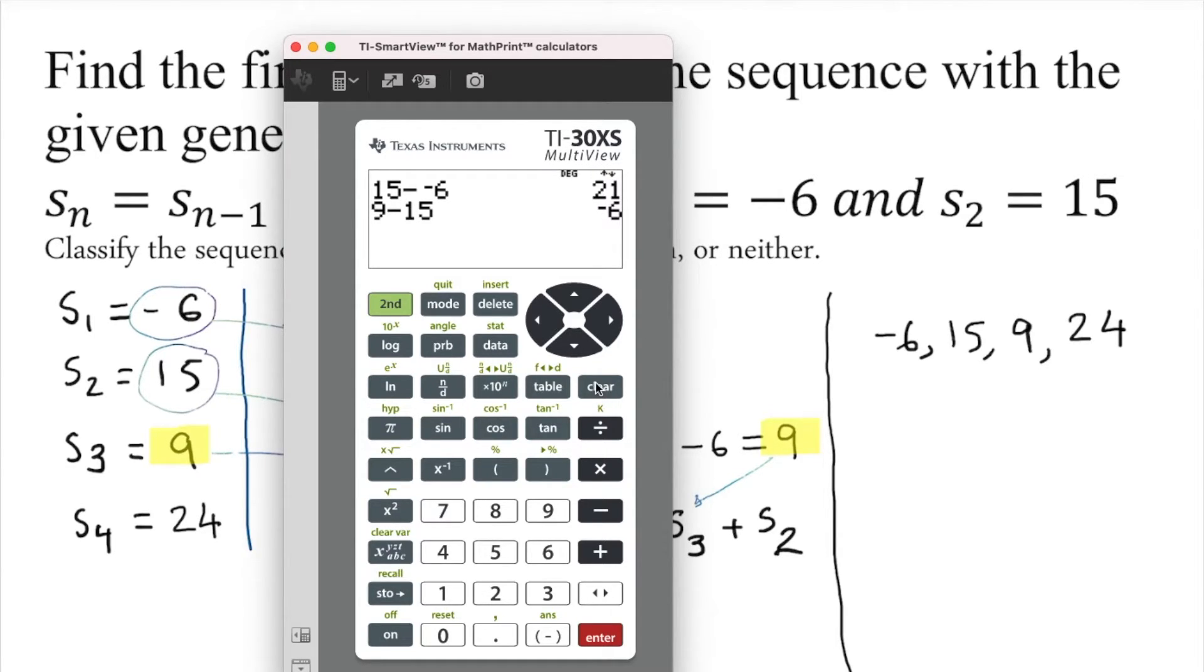Let's try to divide it now. Obviously, 15 divided by negative 6 is negative 2.5, and 9 divided by 15... We don't have the same thing, so it's not arithmetic, not geometric.